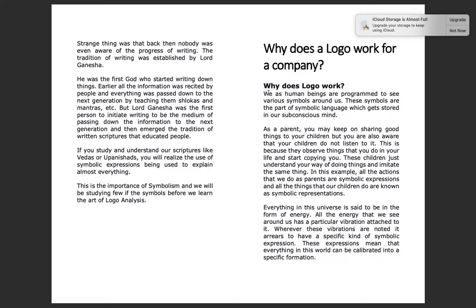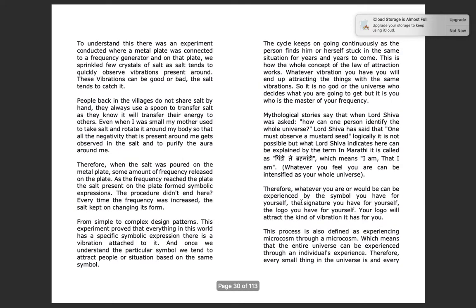If you observe, your kid also copies you — how you behave in front of them becomes a symbolic expression. That is what the second paragraph is about: how a person symbolically copies his parents and becomes like that.